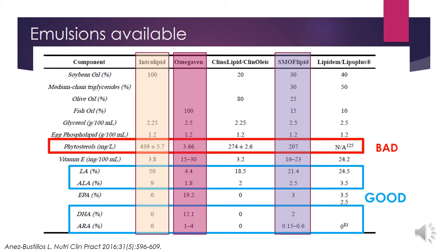First, some background. In the United States, patients dependent upon parenteral nutrition, or PN, receive parenteral fat emulsions composed of soybean oils. Lipids are necessary in parenteral nutrition-dependent patients due to their high calorie value and essential fatty acid content. However, intravenous lipid emulsions have been implicated in predisposing patients to parenteral nutrition-associated liver disease, abbreviated as PNALD, also known as PNAC, which stands for Parenteral Nutrition Associated Cholestasis.